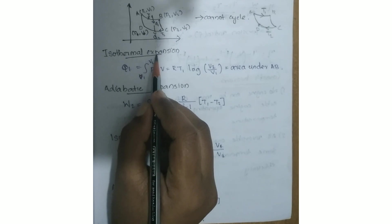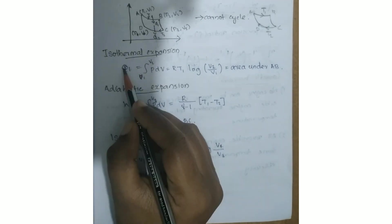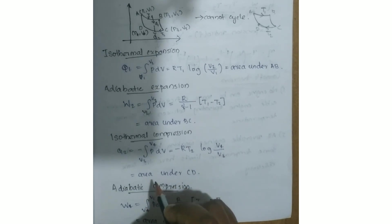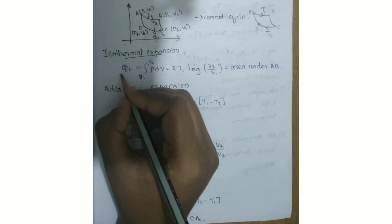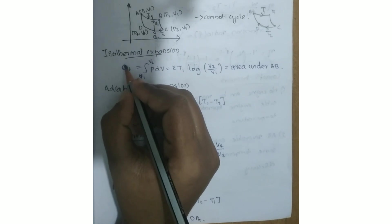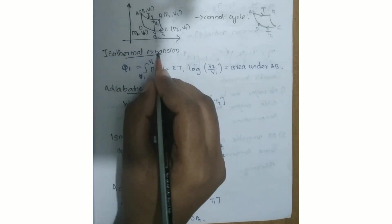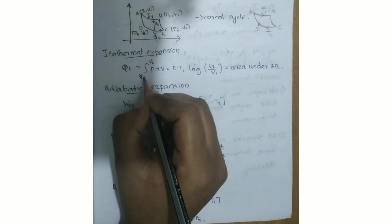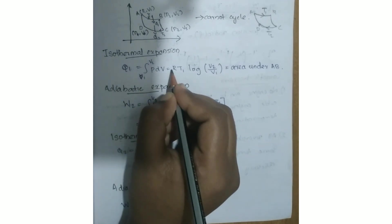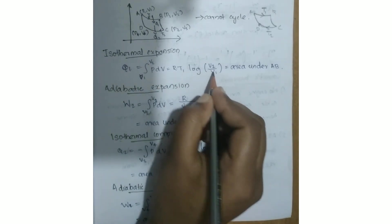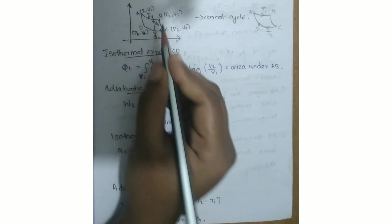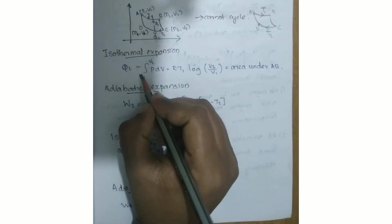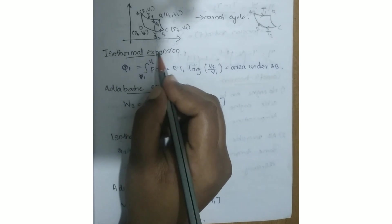The Carnot cycle consists of: isothermal expansion, adiabatic expansion, isothermal compression, and adiabatic compression. Q1 is equal to the integral of V1 to V2 of P dV, which equals RT1 log(V2/V1). This is the area under curve AB — isothermal expansion.